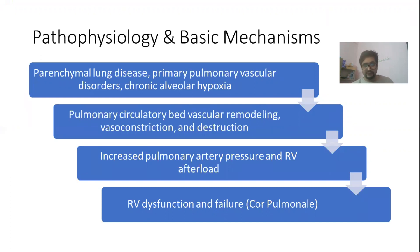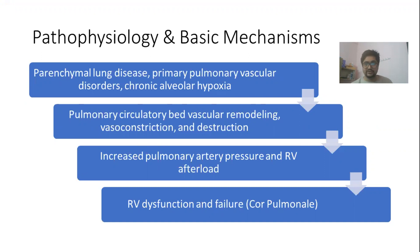When there is an increase in right ventricular afterload, right ventricular dysfunction ensues, leading to hypertrophy as well as dilatation of the right ventricle, ultimately leading to failure of the right ventricle, which is also known as cor pulmonale. This is the basic pathophysiology and mechanism behind cor pulmonale.